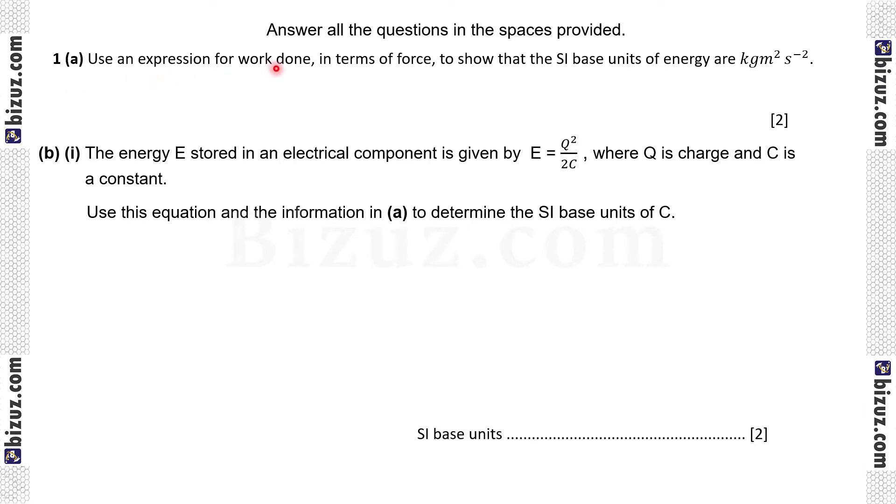Use an expression for work done in terms of force to show that the SI base units of energy are kg meter square per second square. Work equal to force multiplied by displacement. Unit of force is kilogram meter per second square and displacement is measured in meter. So finally kg meter square per second square.